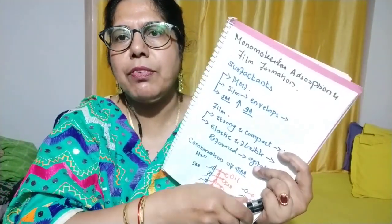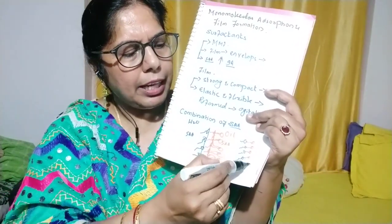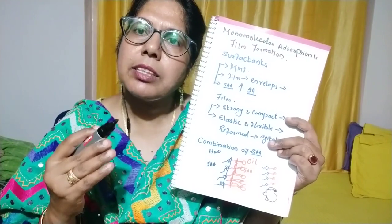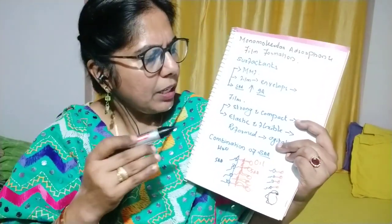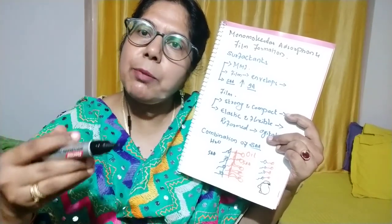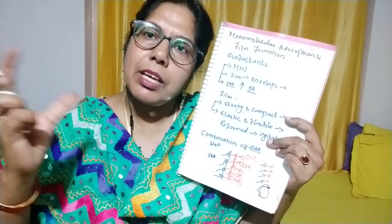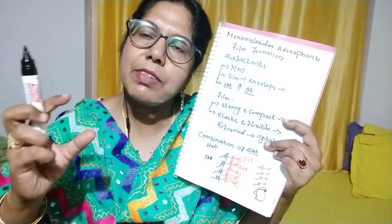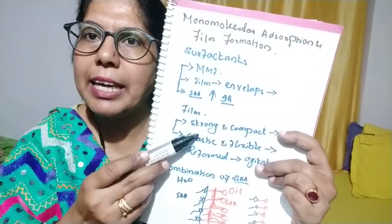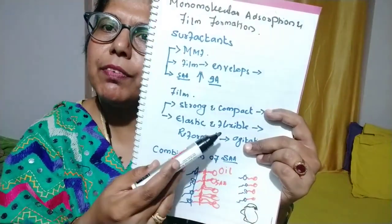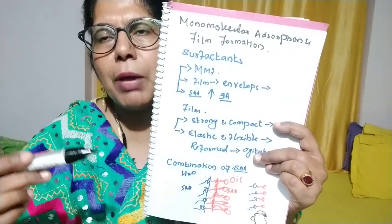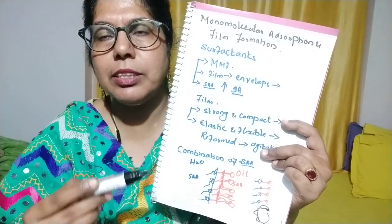The film should be strong, compact, and complex — meaning it should be unbreakable. If it is broken through agitation — for example, biphasic dosage forms say 'shake well before use,' so while stirring if the film breaks — it should be highly elastic in nature and flexible, so that with a little agitation it forms a film again around the dispersed globules.